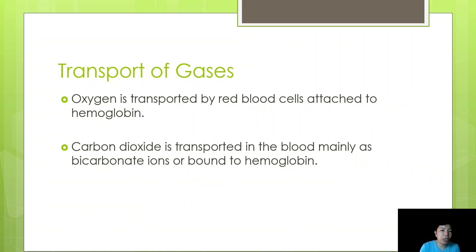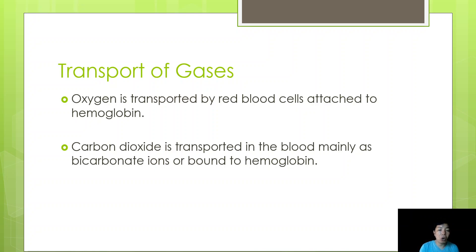For the transport of gases, oxygen is transported by red blood cells attached to hemoglobin. After diffusing into the bloodstream, oxygen attaches to the red blood cells, specifically to the hemoglobin. Carbon dioxide is transported in the blood mainly as bicarbonate ions, also bound to hemoglobin. Oxygen-rich blood appears bright red, while carbon dioxide-rich blood is darker in color.